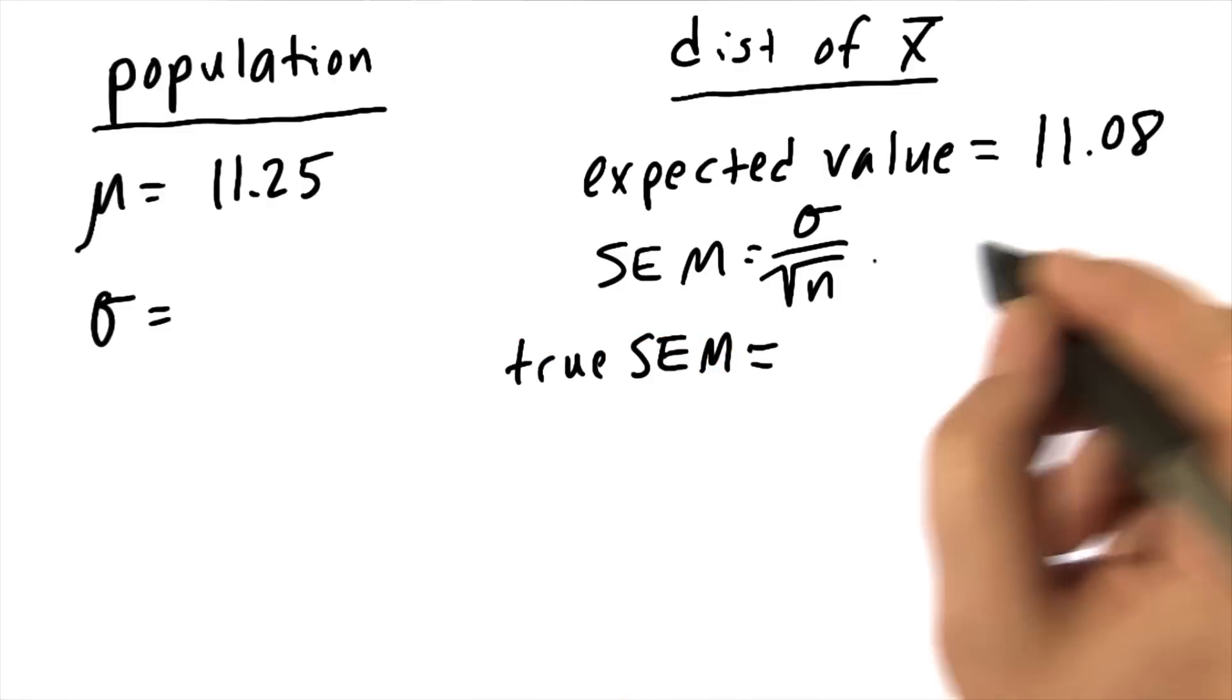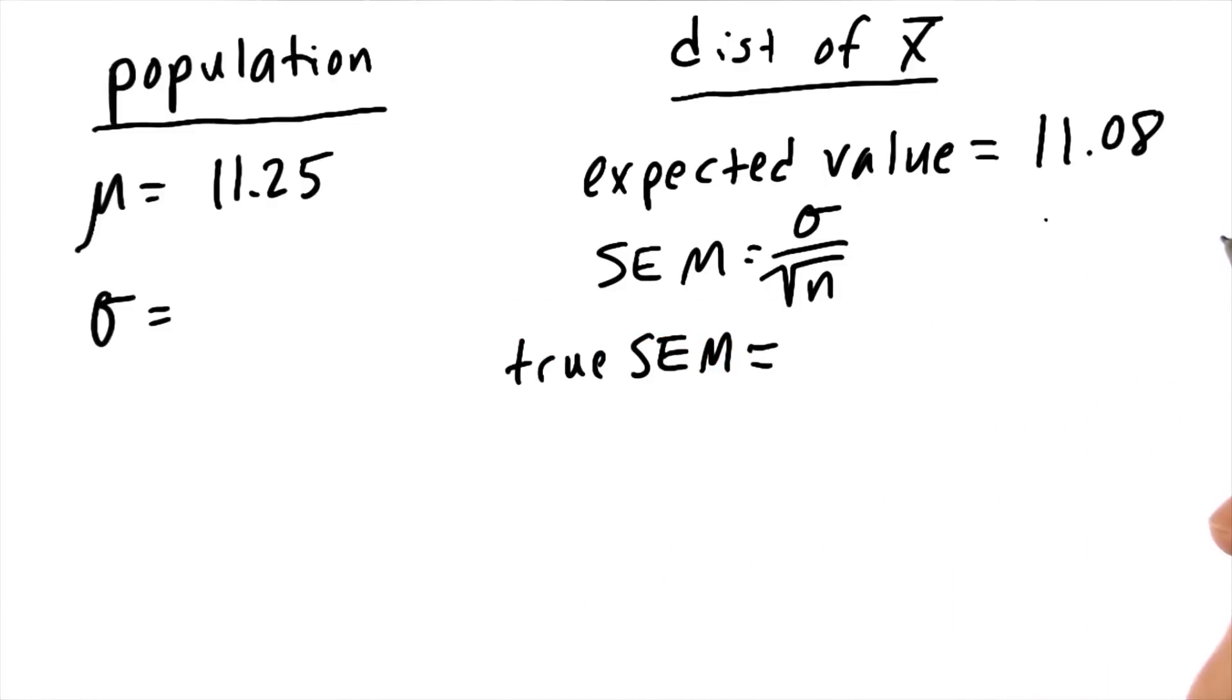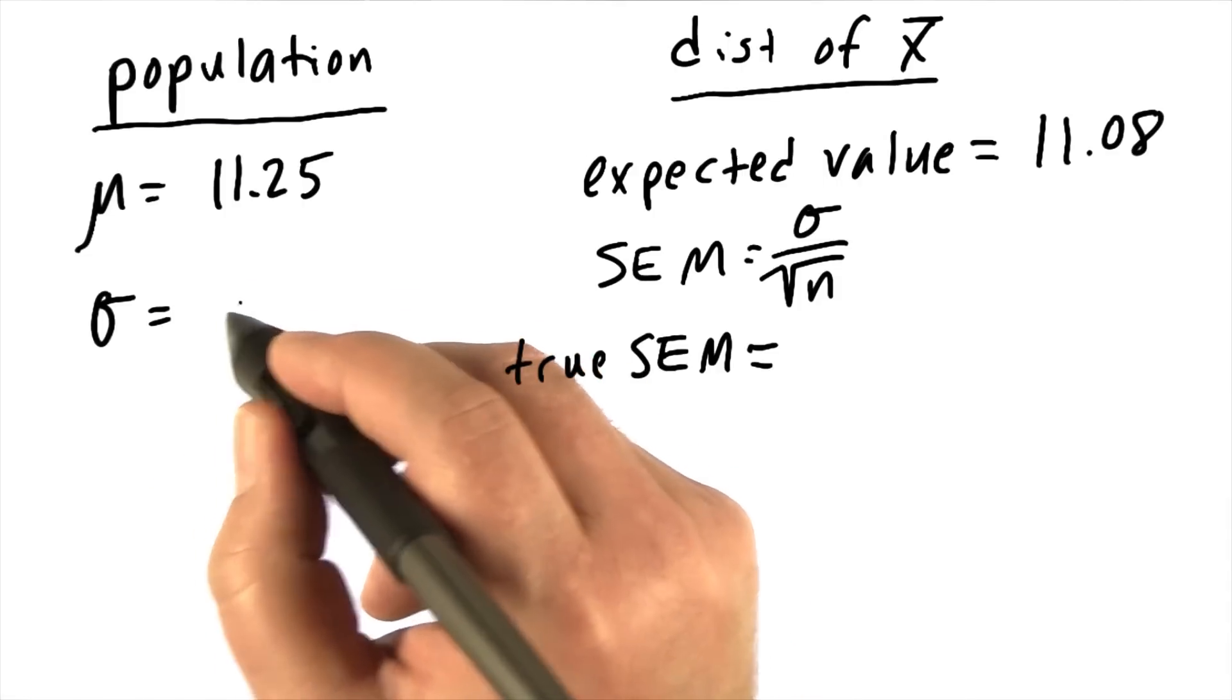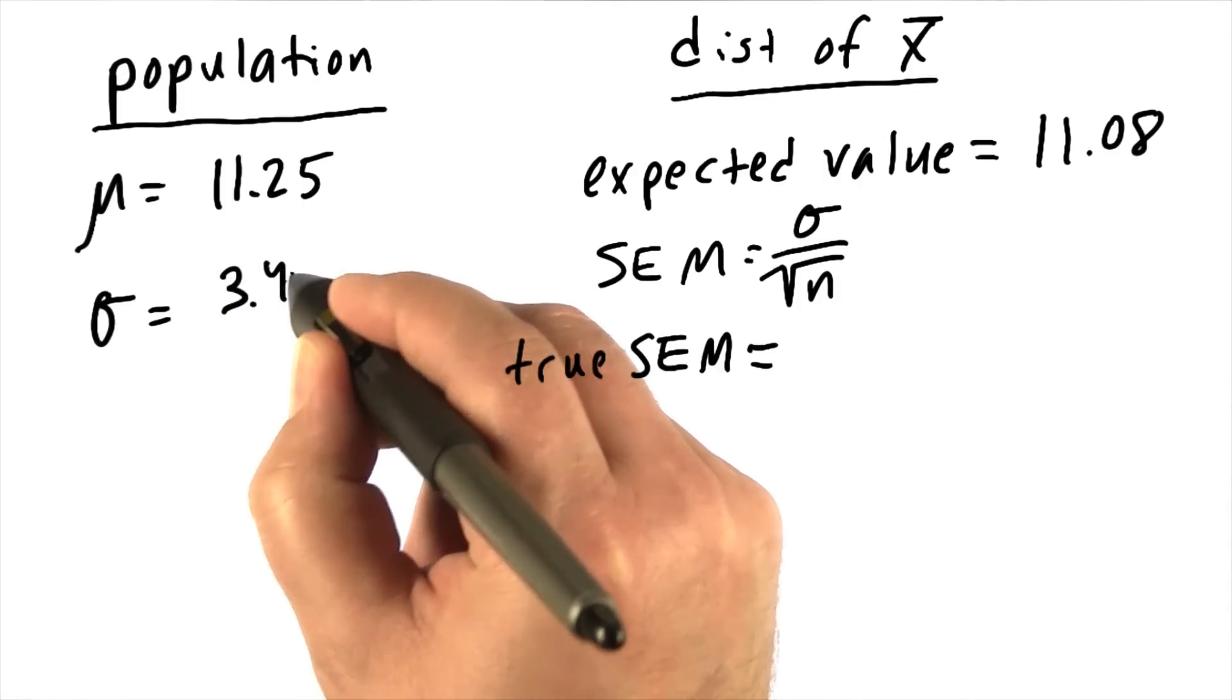Notice, those are pretty close. They're not exactly the same, but they're not far off. The population standard deviation for all 48 plates, or bags, was 3.49.